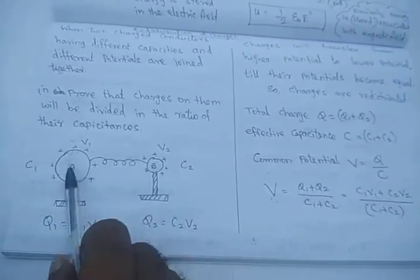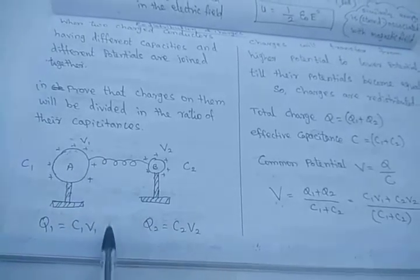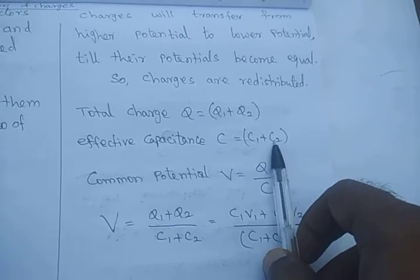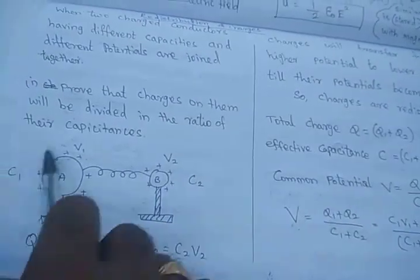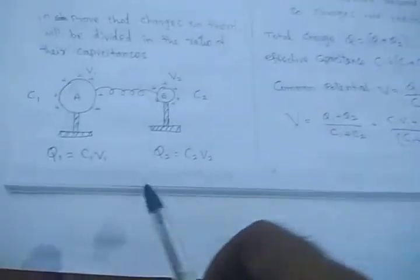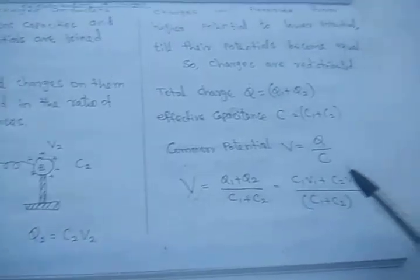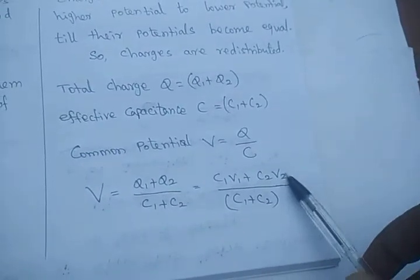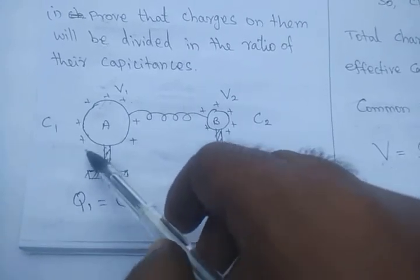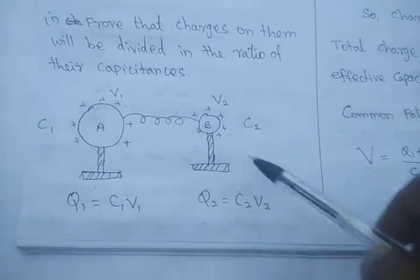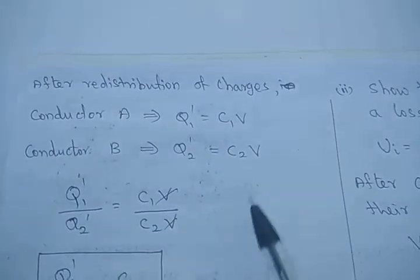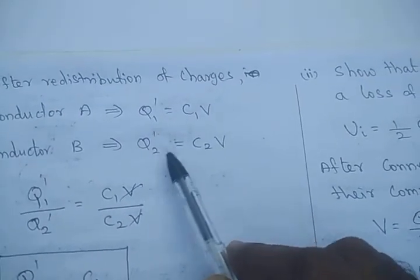The total charge in this system of A and B is q1 + q2, and the total capacitance is C1 + C2. The common potential for A and B is V = (q1 + q2)/(C1 + C2). Substituting q1 = C1V1 and q2 = C2V2, we get the common potential expression. After redistribution, conductor A has charge q1′ = C1V and conductor B has charge q2′ = C2V, where V is the common potential.